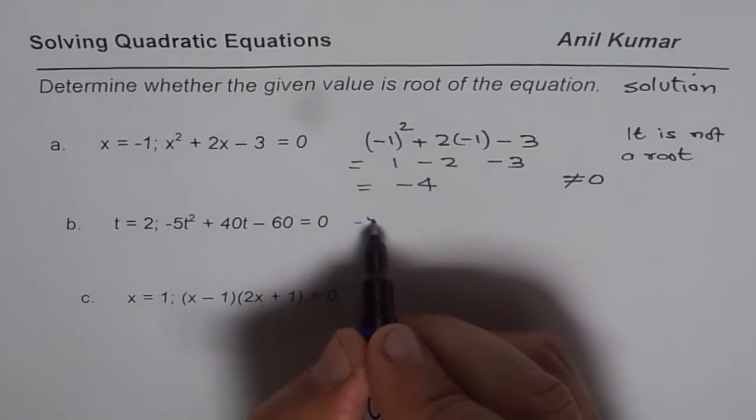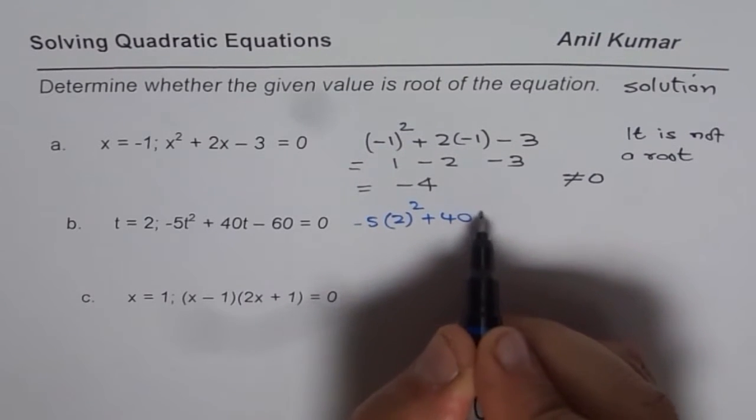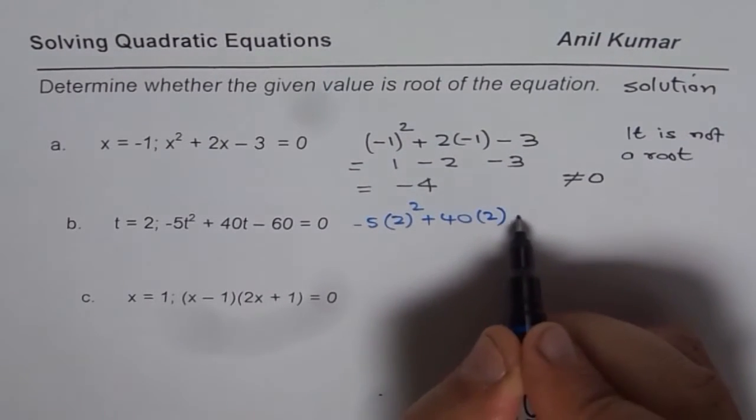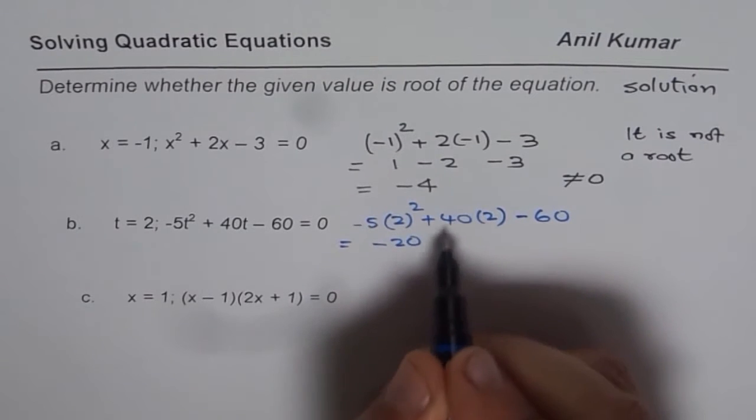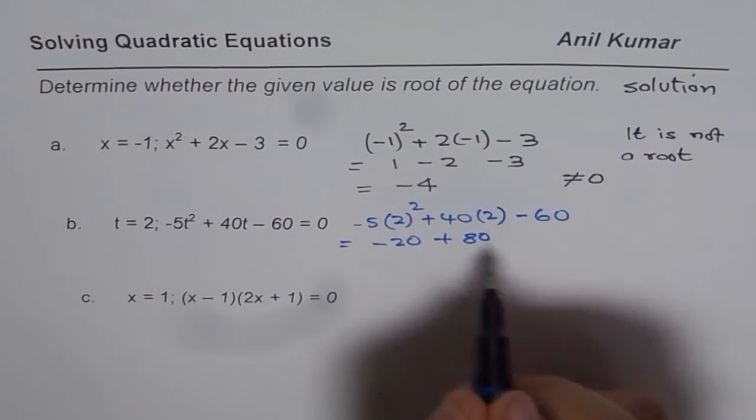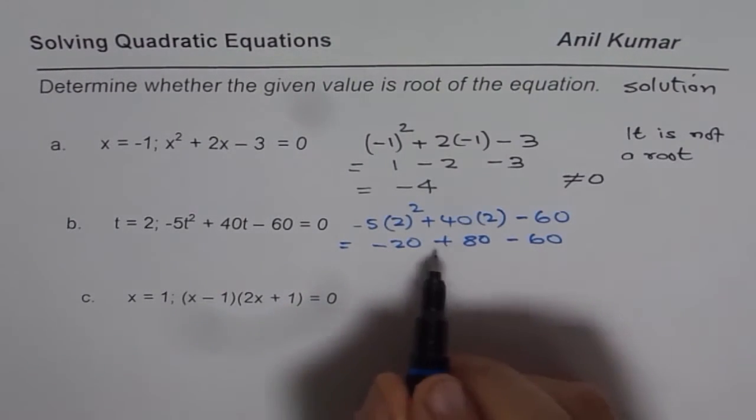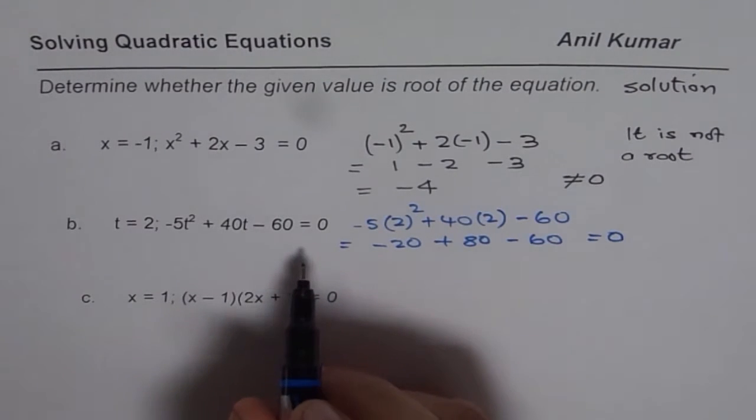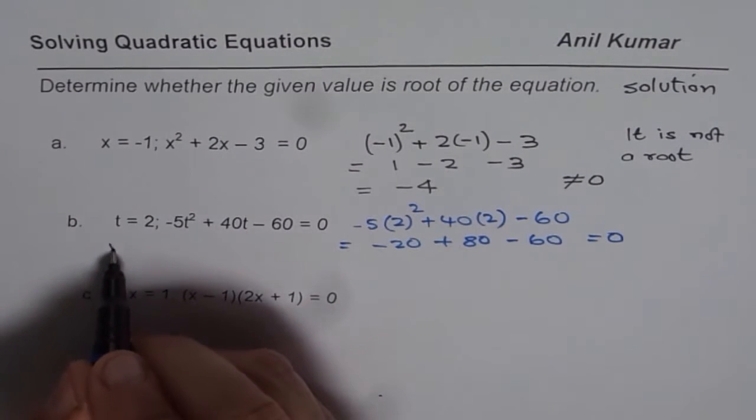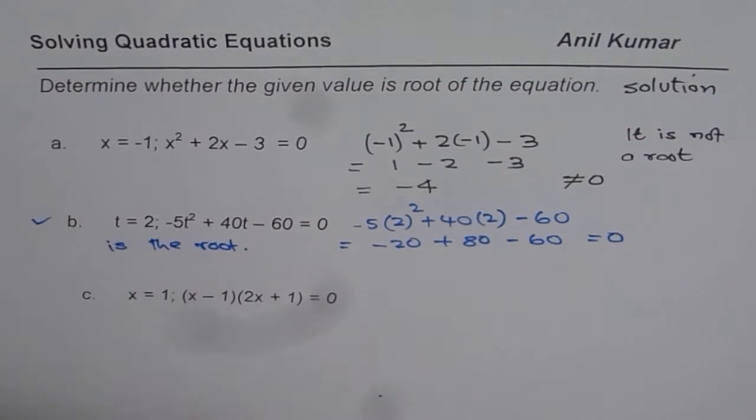So we have -5(2)² + 40(2) - 60. You can actually use a calculator to do these calculations. 4 times 5 is -20, we have plus 80 and minus 60. Now this is -20 + 80 - 60, so this indeed equals 0. And therefore, we say yes, t = 2 is the root of the equation.